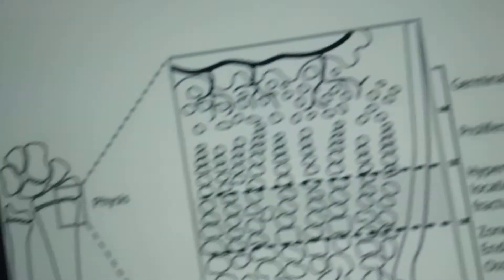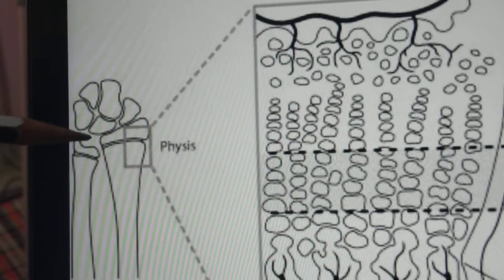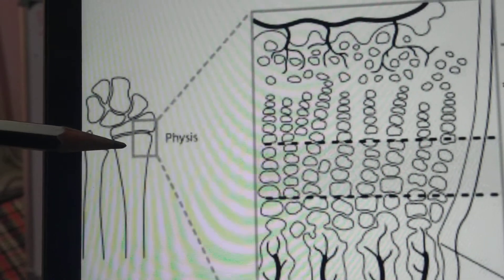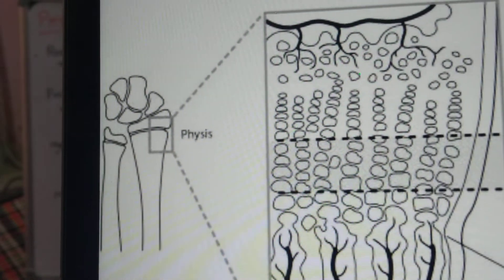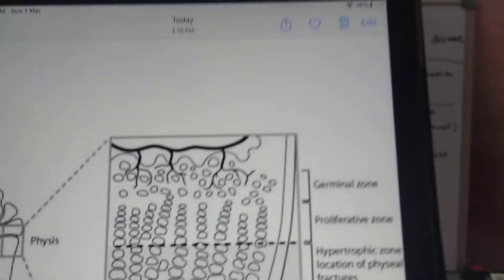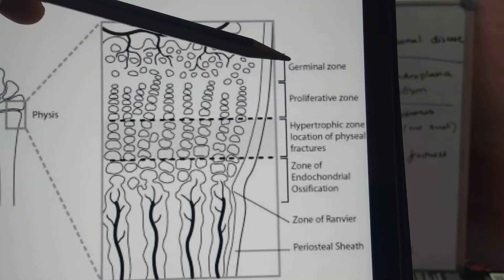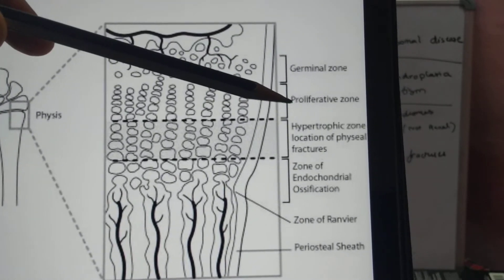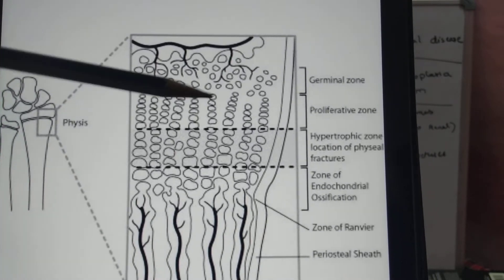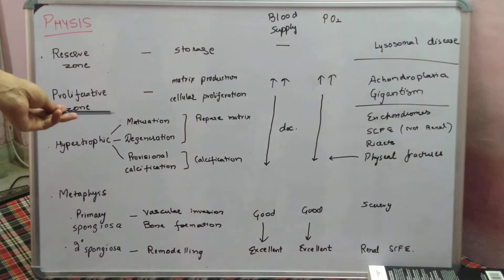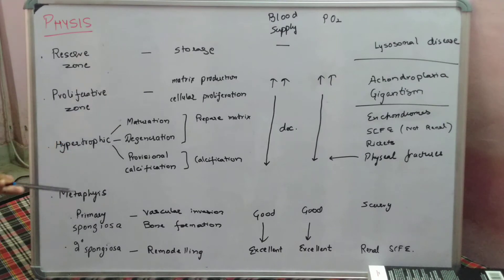From basic anatomy, the part of the bone that articulates with the joint is known as the epiphysis, the part where growth occurs is known as the physis, and the broader part is known as the metaphysis. The zones of the physis run from epiphysis to metaphysis: the germinal or resting zone, the proliferative zone, and the hypertrophic zone, which contains the zones of maturation, degeneration, and provisional calcification.